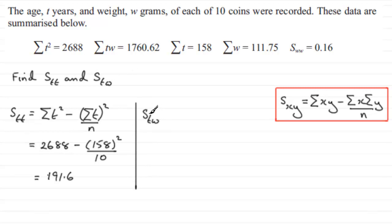STW. So when I compare it to what we've got over here, again we've got the X is the T and the Y is the W. So for STW, we're going to have sigma TW instead of that XY, and then minus sigma T, sigma W, over N.